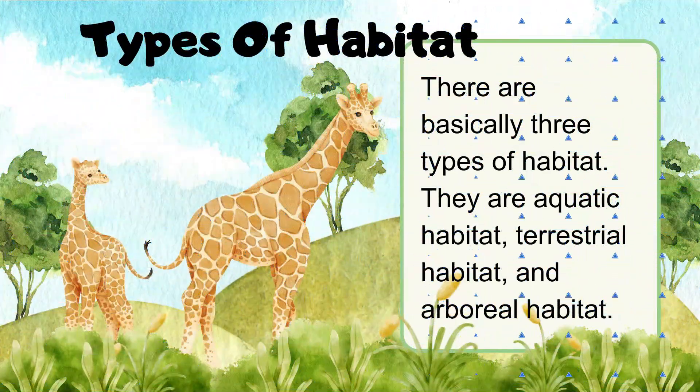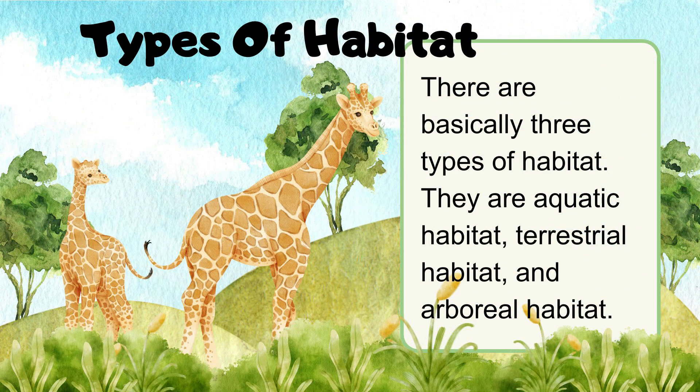There are basically three types of habitat: aquatic habitat, terrestrial habitat, and arboreal habitat.